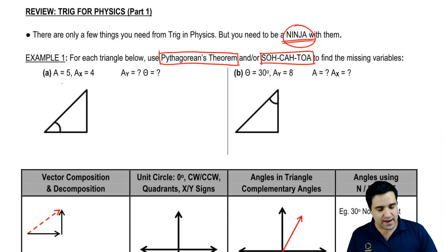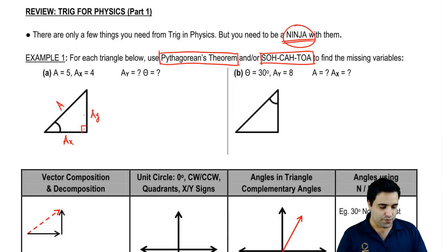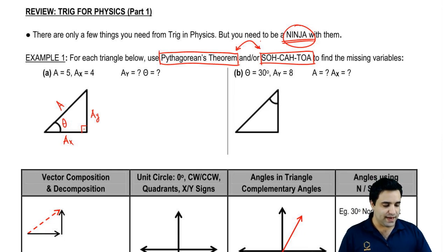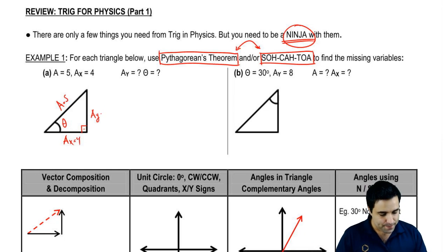Every triangle in physics will be a right triangle — 90 degrees here. All triangles have four variables: the three sides and the angle. There's an angle on the other end too, but if you know one angle you know the other, so these are the four main variables. As long as you have two of them you can find the other two. Here I'm given A equals 5, AX equals 4, and I'm looking for AY and theta.